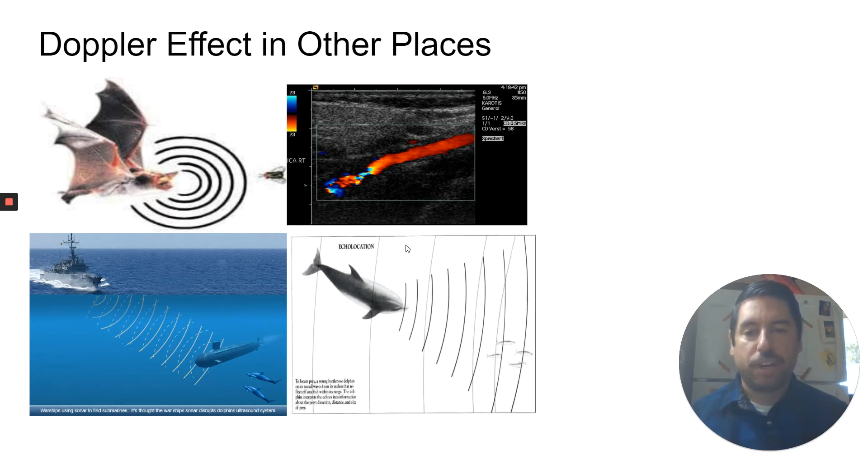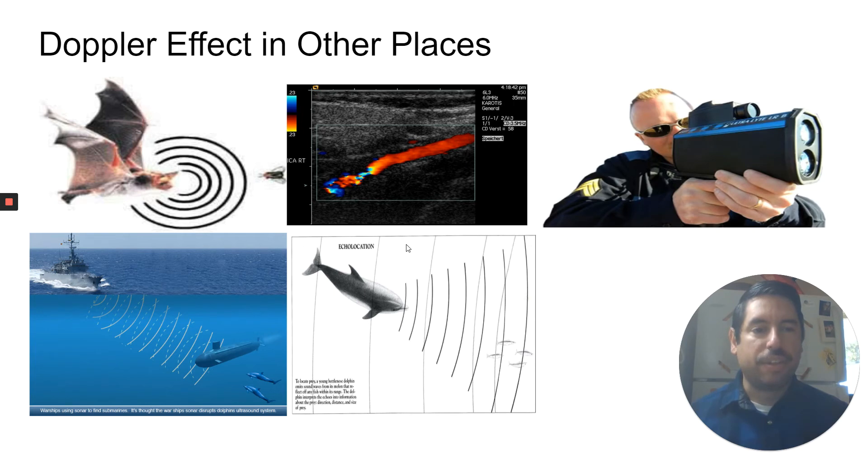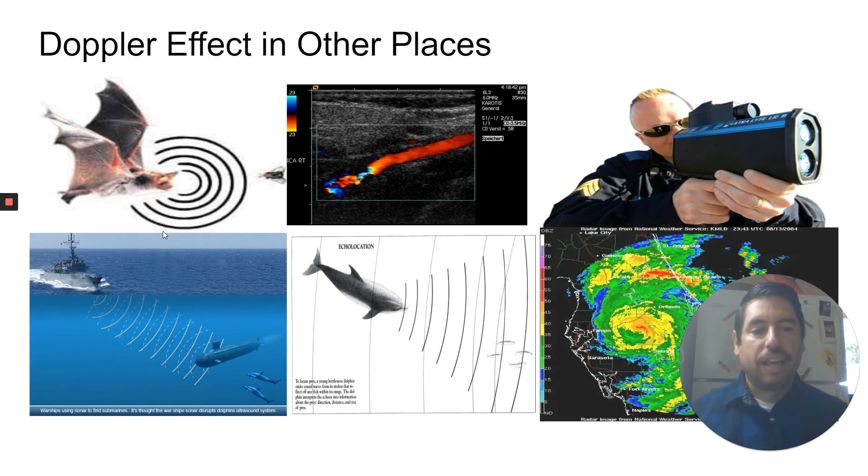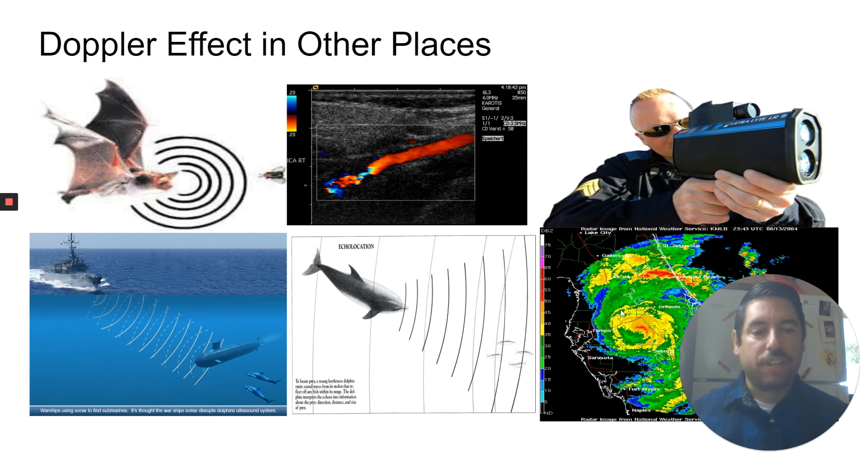The same thing is true with submarines using sonar or ships using sonar. This is an ultrasound, I believe. And it also uses Doppler effect in motion. Dolphins use it, also echolocation. Radar guns, that's how they determine how fast you're going. It's basically bouncing off. And so you can tell if it's bouncing off towards you or if it's going away from you. And weather patterns, they can use that to determine the direction of weather.